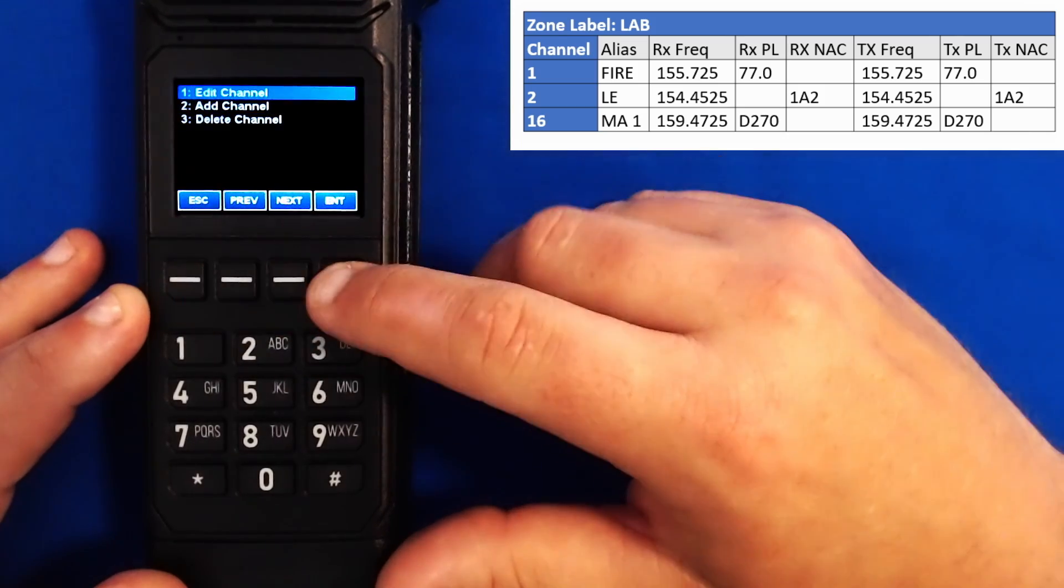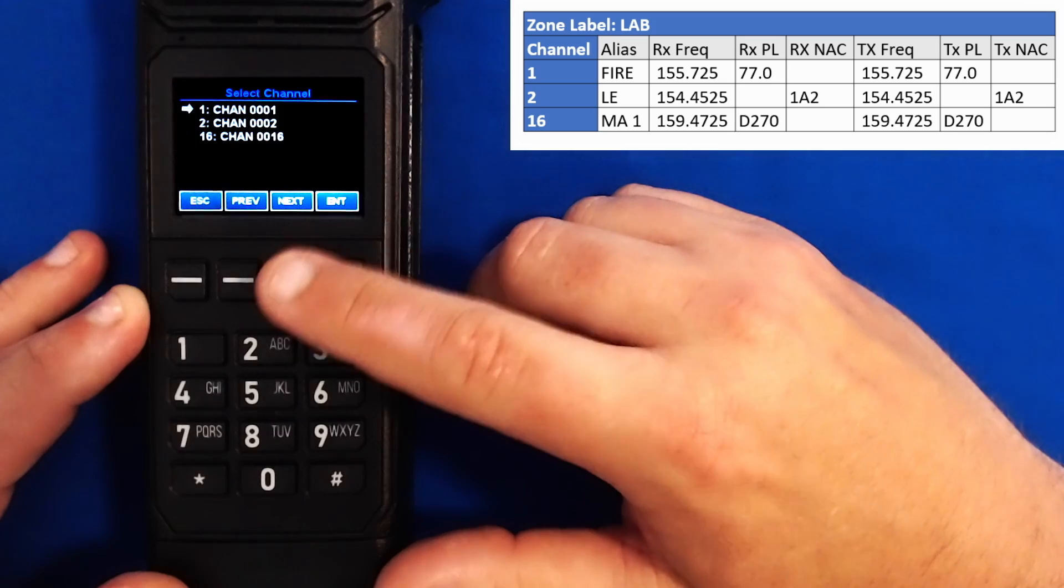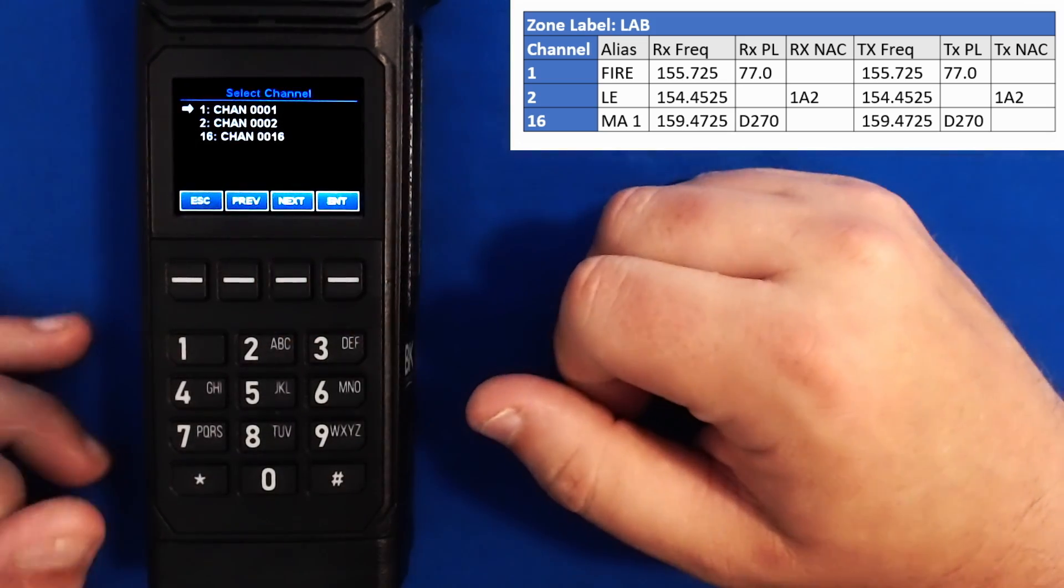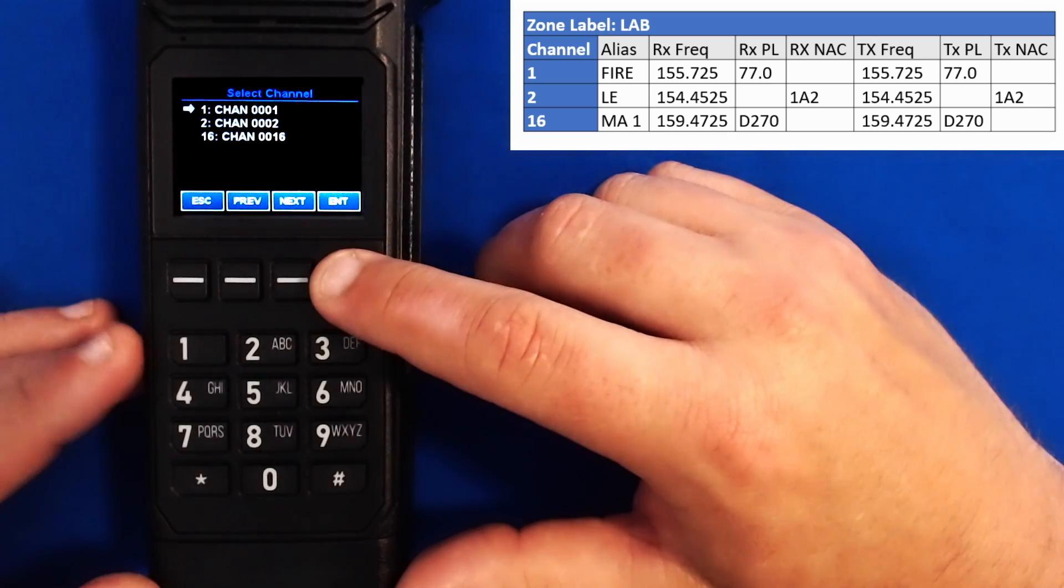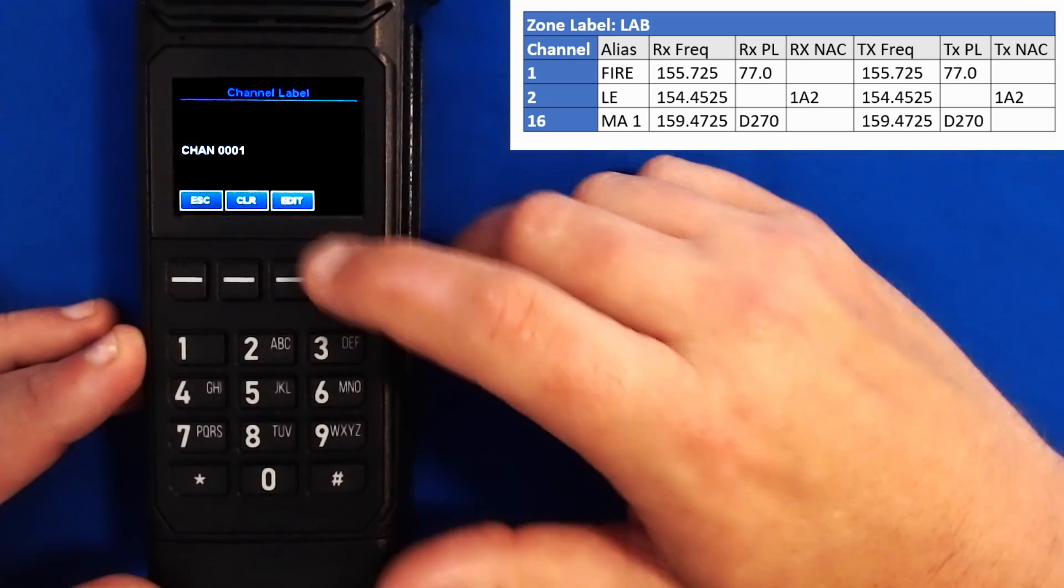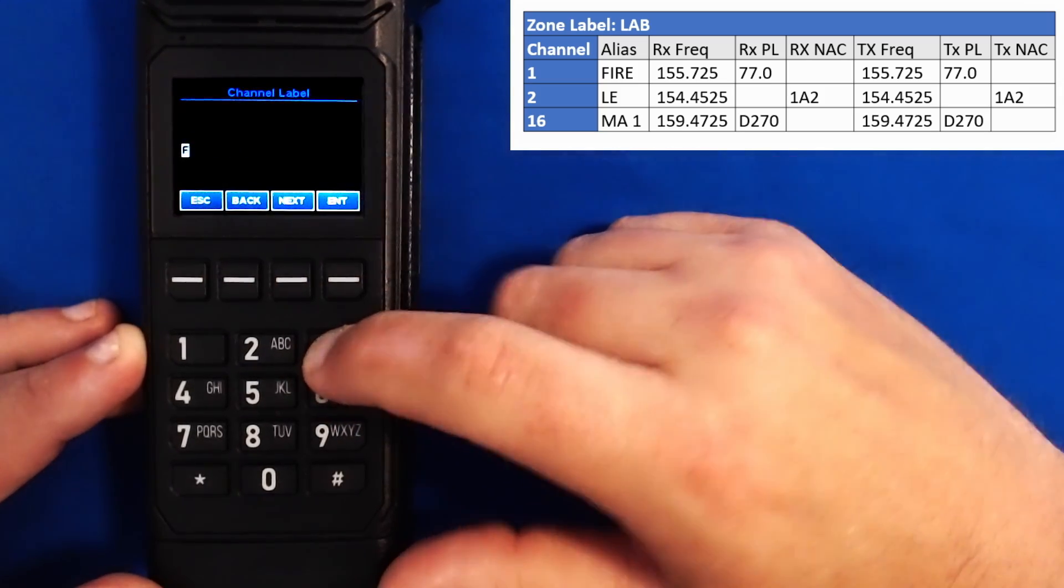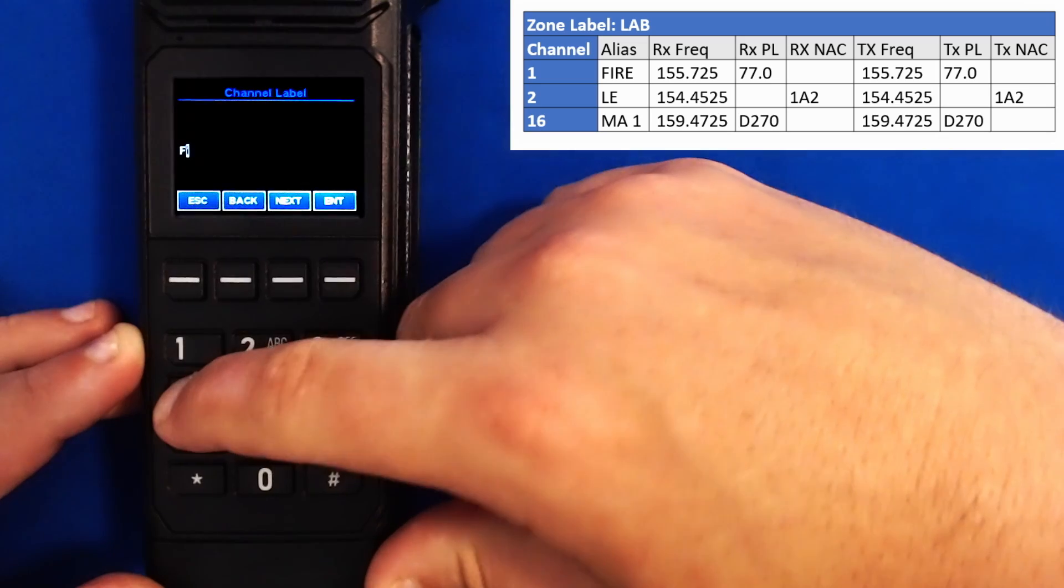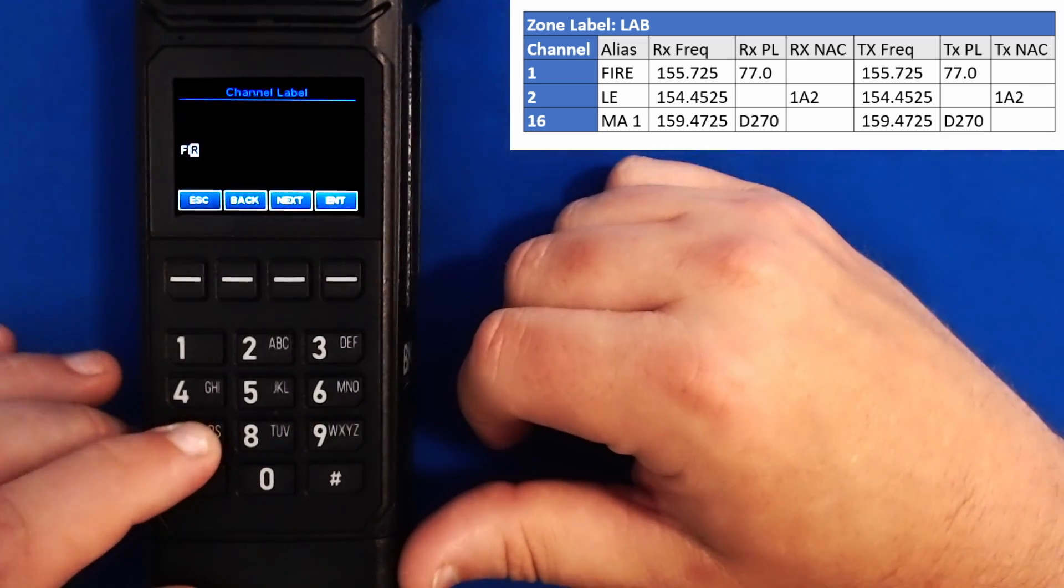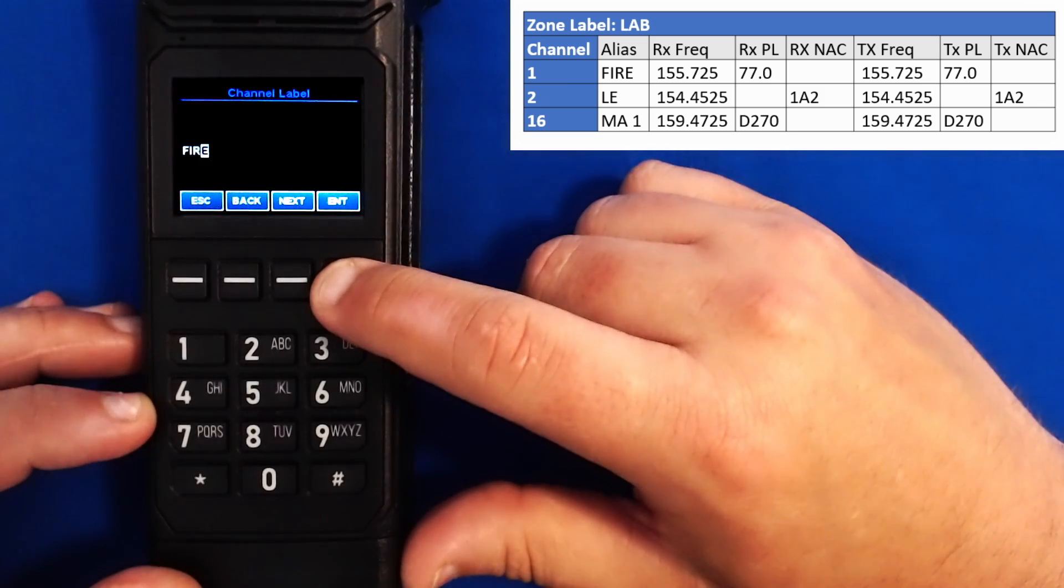Now that I've added my three channels, let's edit them. Let's scroll up to edit, let's select the zone the channels are in. And now we can see the three channels we added: channel 1, channel 2, and channel 16. Let's press enter to edit channel 1. And let's begin at the channel label. I'll hit clear and type in fire.